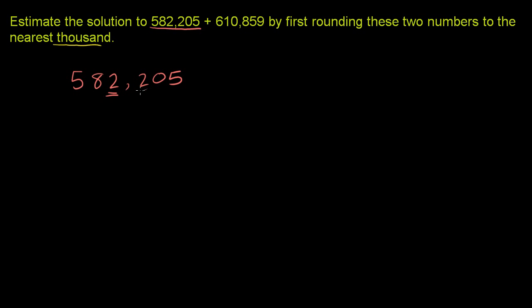This is less than 5. The 2 here is less than 5, so we want to round down. We're going to round it down to 582,000. We're just going to round down to 2,000. We're getting rid of all this 205 here. 582,000 when we rounded it down to the nearest thousand.